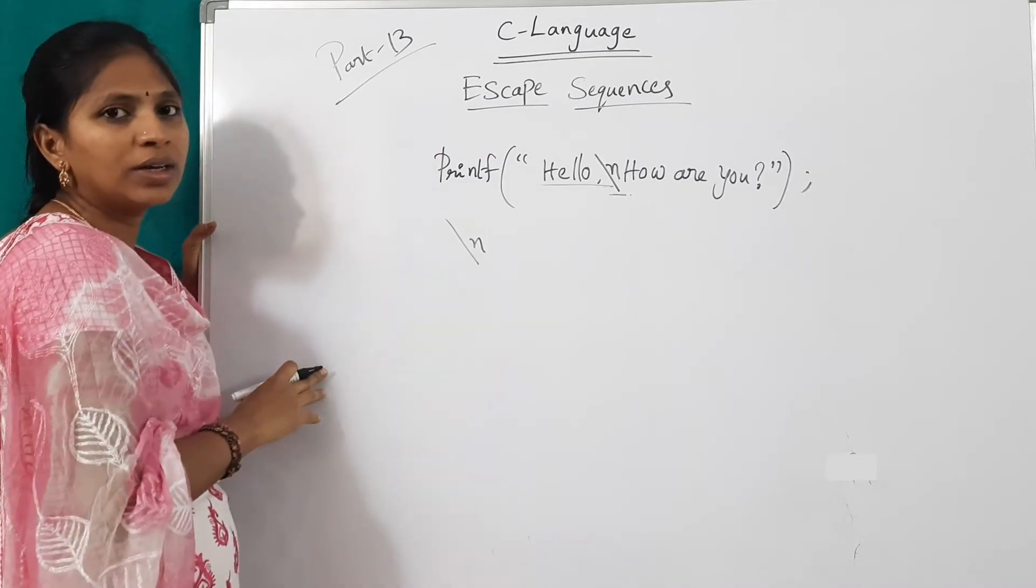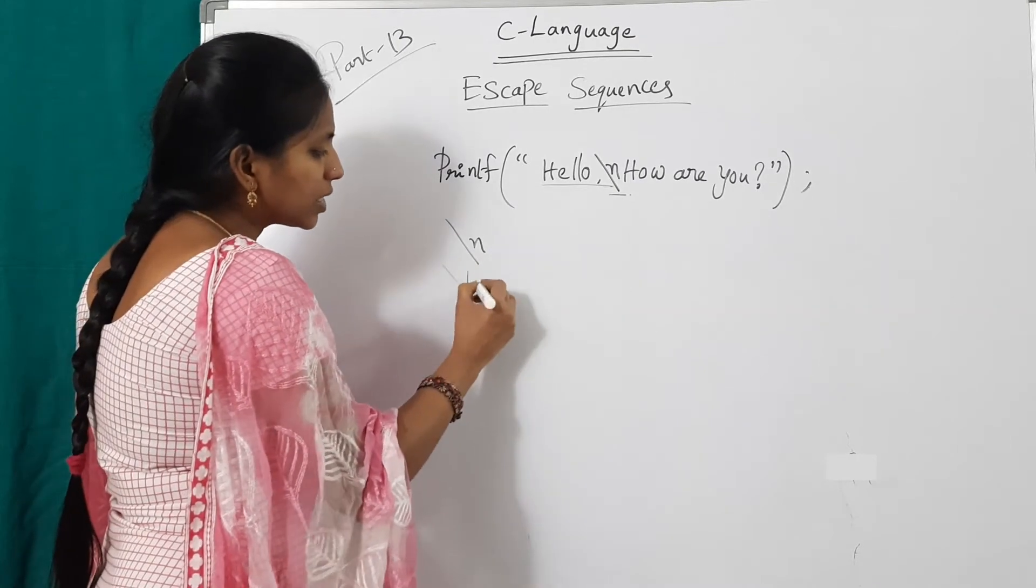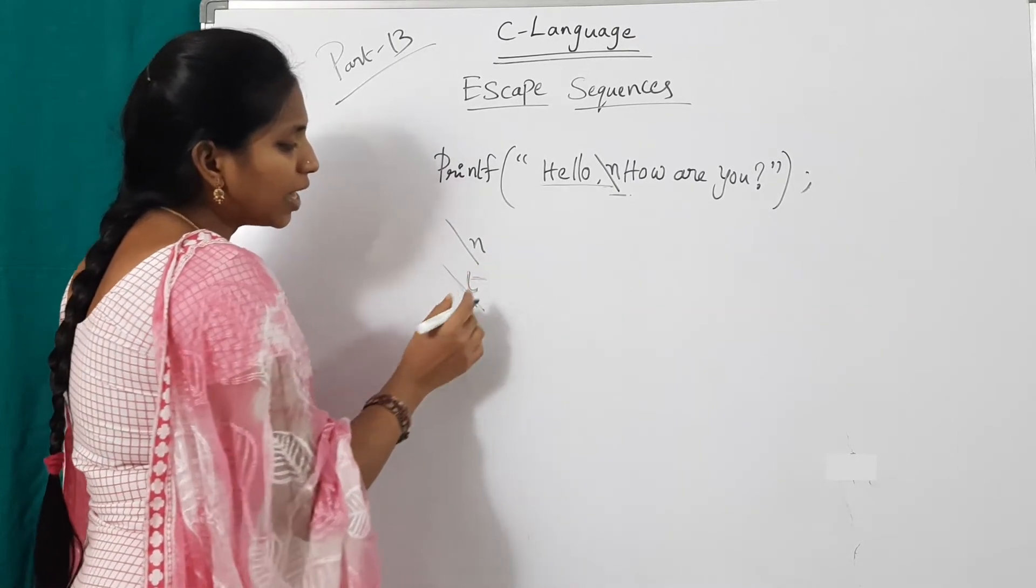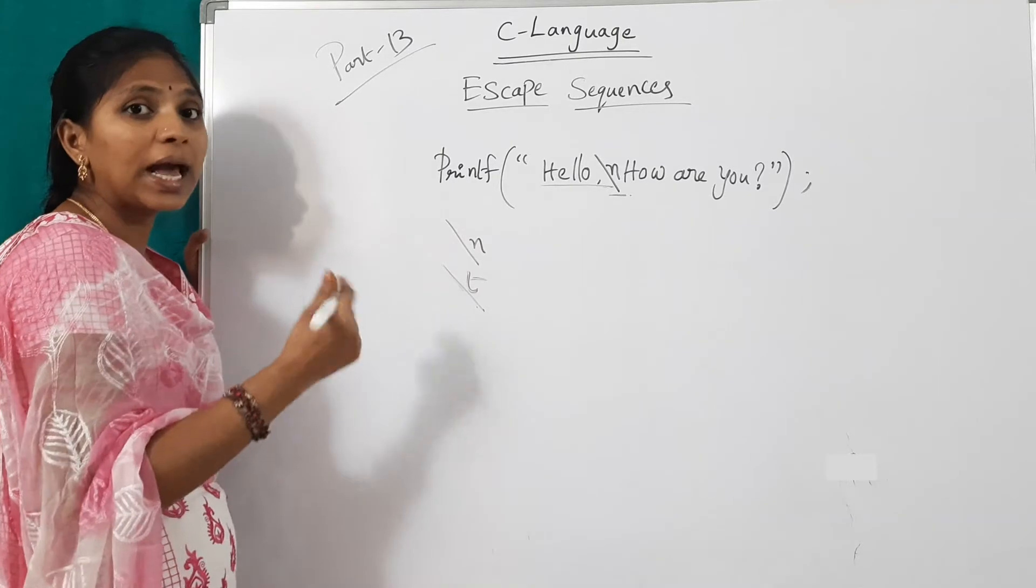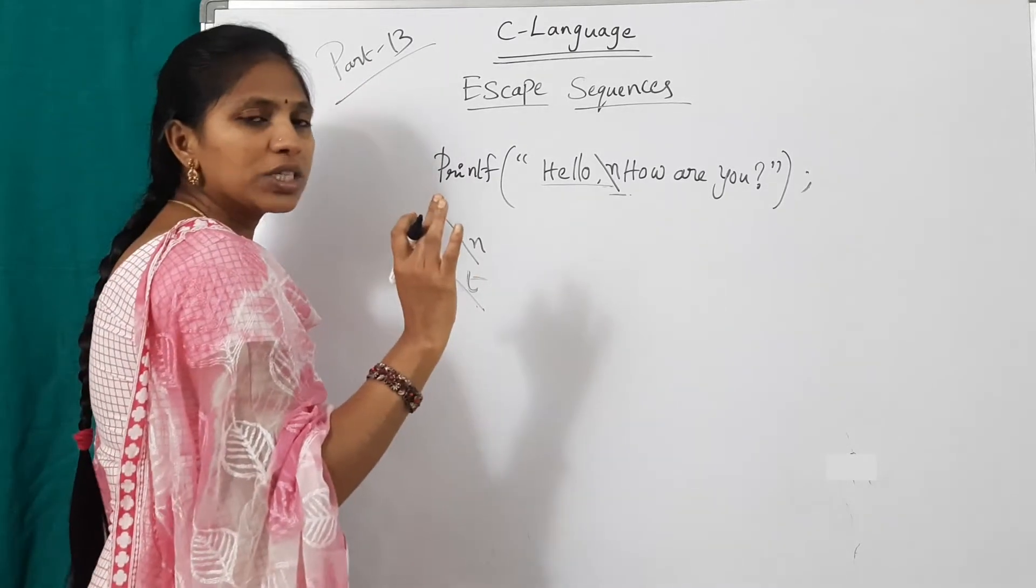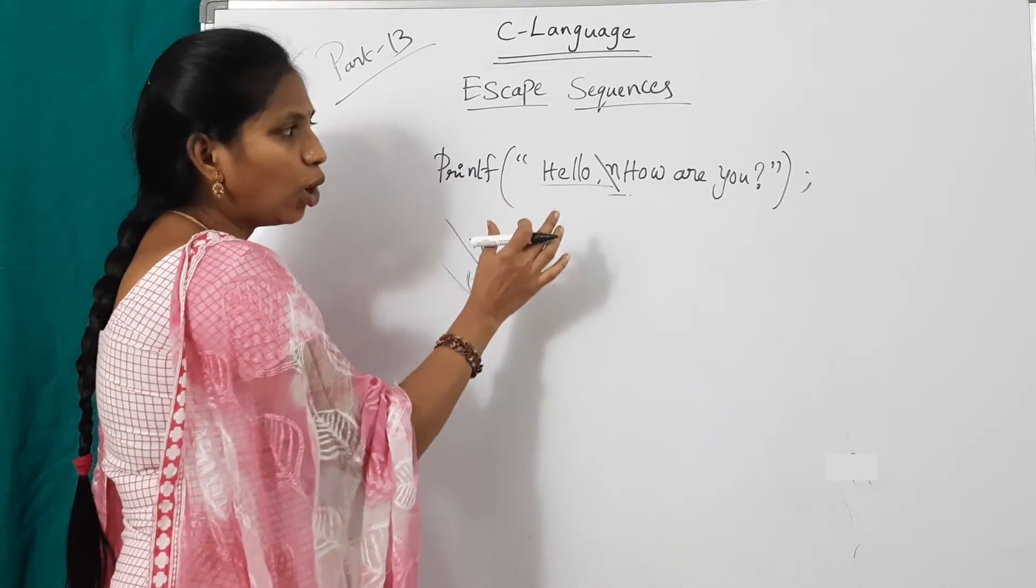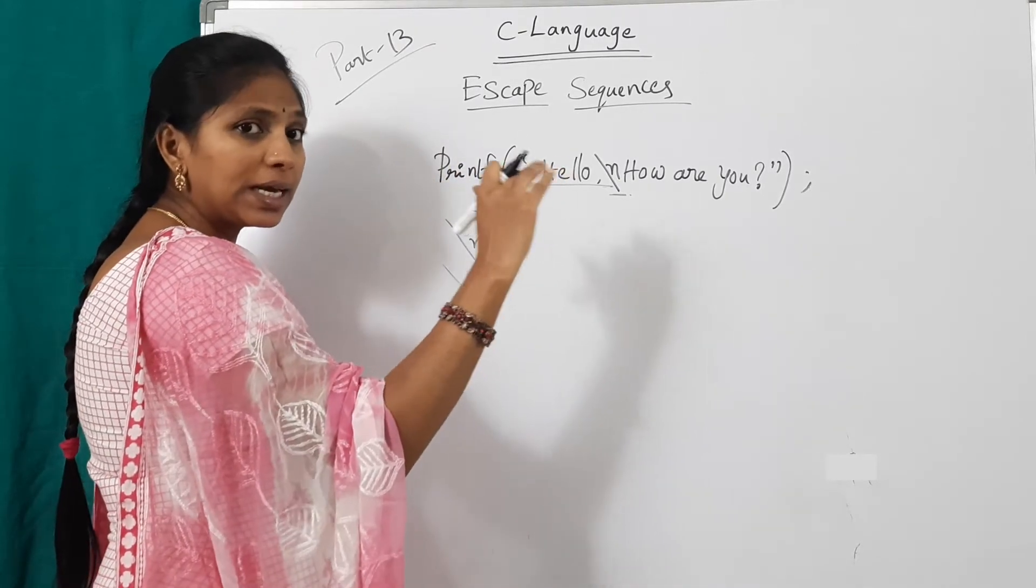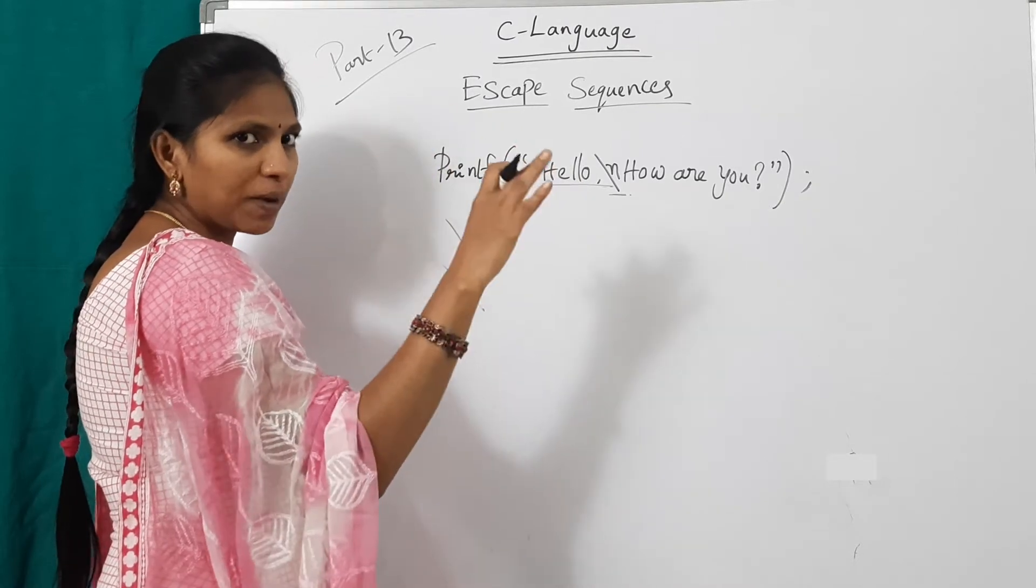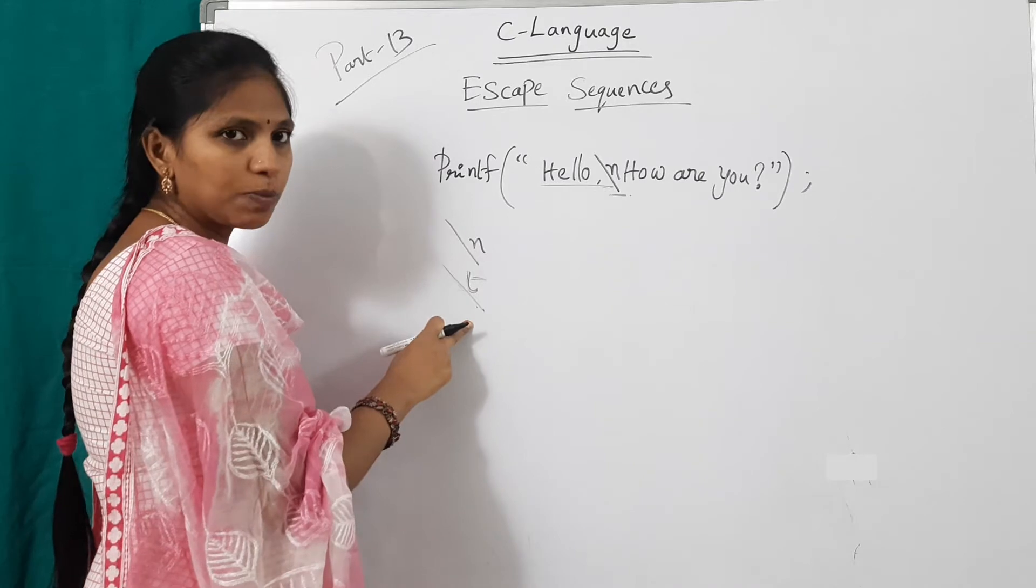This is the use of slash n. And another escape sequence character is slash t. Slash t is an example of tab space. To get a tab space at result screen. But suppose if I use slash t instead of slash n, then result is hello. After that, there may be tab space, five or six spaces, then how are you. Slash t is for tab space.